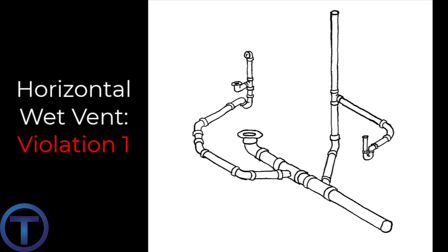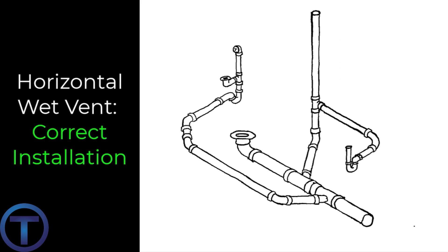The tub should connect downstream from the lavatory so that it has an individual connection to the wet vent. Plumbers do this all the time, and inspectors overlook it all the time. Here is how it should be done correctly: the tub should branch off from the horizontal wet vent downstream from the lavatory, even if that means running its trap arm a little bit farther — while still limiting that trap arm to what code would allow.